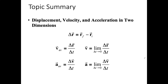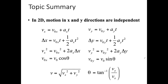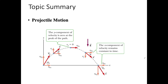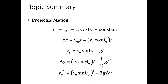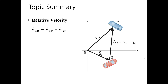To summarize: we defined displacement, velocity, and acceleration in two dimensions. Motion in x and y directions are independent, so you can use kinematic equations separately in each direction. Projectile motion is constant velocity in x and free fall in y. Those are the kinematic equations needed for projectile motion. We also covered the simple topic of relative velocity. I'll make a video with more projectile motion examples and upload it soon. Thank you for your attention.